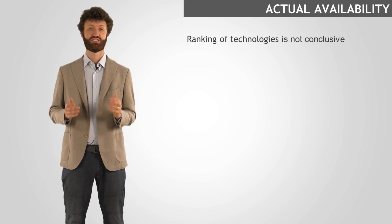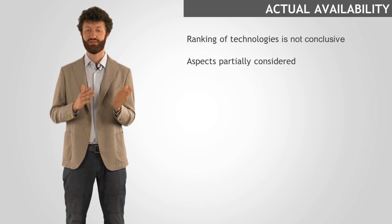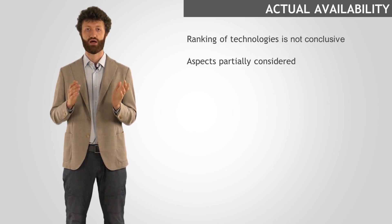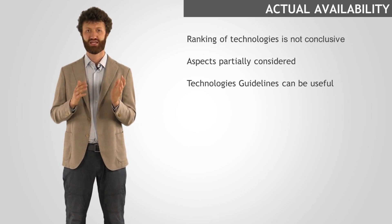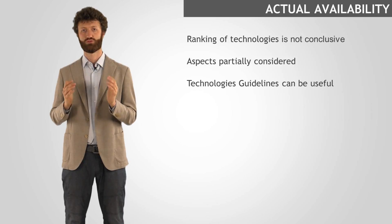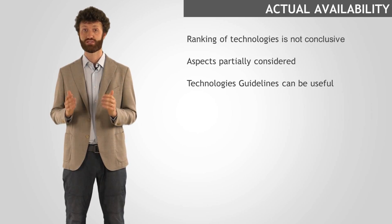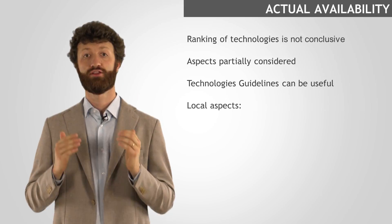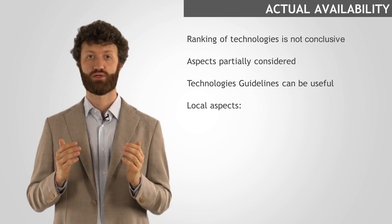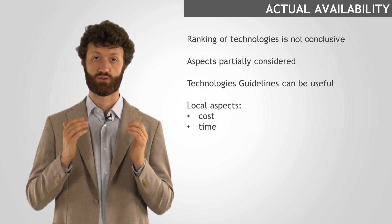Some aspects were only partially considered by the DSS, like evaluability and affordability, and others were evaluated with a general approach. The technology guidelines can be very useful to go into more detail. Excluded technologies are very likely inappropriate for the context, while the selected ones have to be confirmed against some very local aspects. The first and most important one is the actual availability, including cost and time needed to procure the required stock.